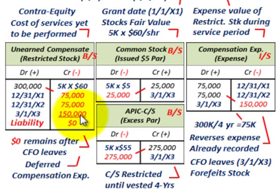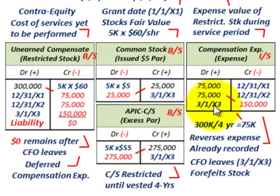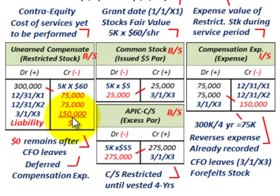Just look at your debits and credits — they balance. We had to remove the stock because the employee didn't serve the full four years; he only worked two years and then quit, and it took four years to vest the stock. The compensation expense — the value of the restricted stock expensed during the service period — was done on an even basis over four years, but we only got to year two, so we had to reverse it out. The same goes for common stock par and excess — reversed off the books. The unearned compensation balance is also reversed out, leaving zero.